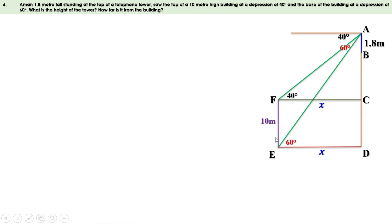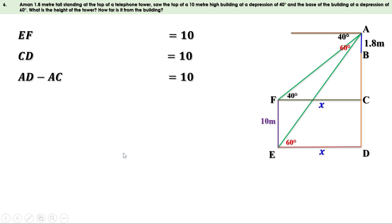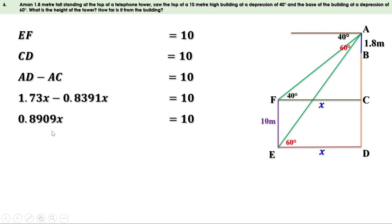Given that the height of the building is 10 meters, EF equals 10 meters, and EF equals CD, so CD equals 10 meters. CD equals AD minus AC. Therefore AD minus AC equals 10 meters. Substituting: 1.73x minus 0.8391x equals 10. Subtracting, we get 0.8909x equals 10.